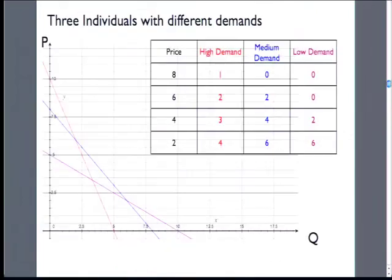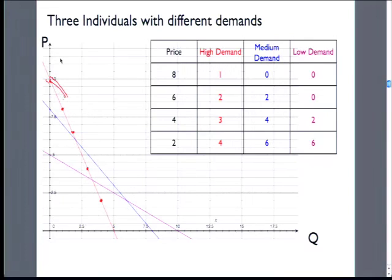These are just some sample numbers, but we need to go shopping. When we go shopping, we have three different demand curves — just the points to plot from the different roommates. At $4, this person would buy three pizzas. At $2, this person would buy four pizzas. You can see I'm just taking my sample numbers, drawing a line through them, and color coding them. We have a demand curve for the high demand roommate, one for the medium roommate, and one for the low demand roommate.